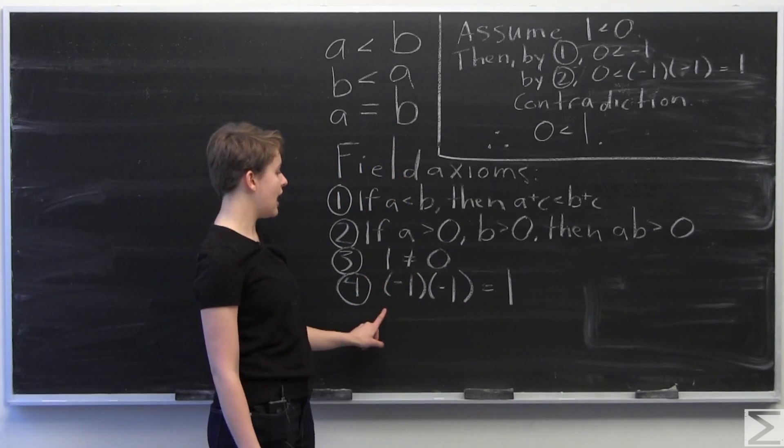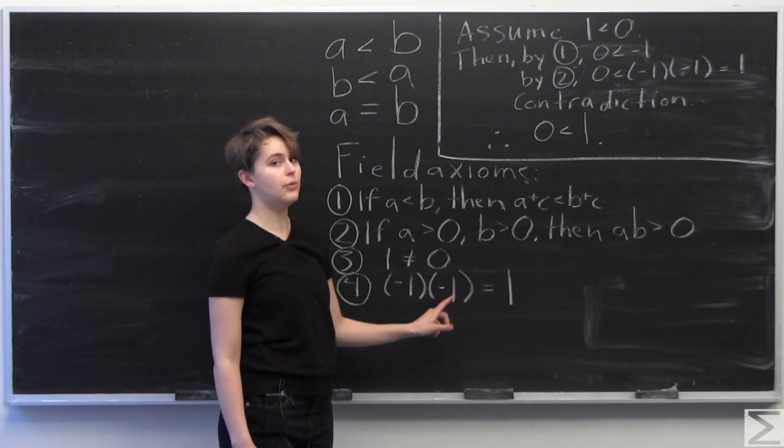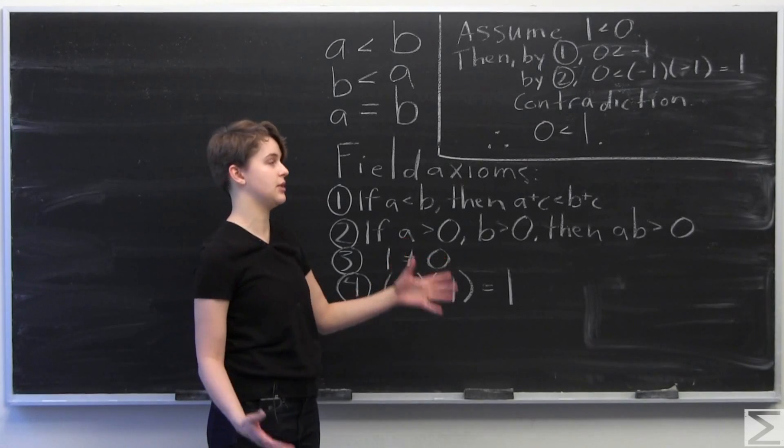1 does not equal 0, and negative 1 times negative 1 equals 1. And we're going to use these four axioms to prove a seemingly obvious fact.